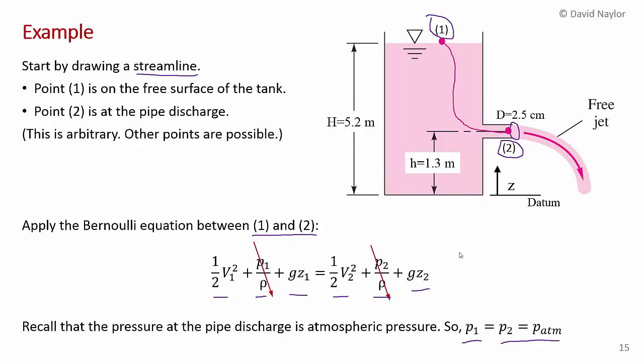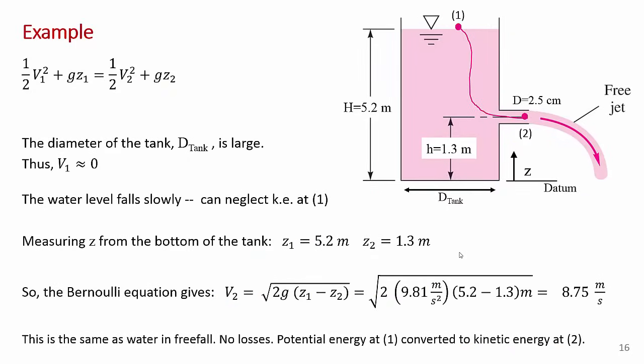So in the next slide, I think I've rewritten this with those two terms eliminated. So now we just have the kinetic energy per unit mass plus the potential energy per unit mass at one equals the kinetic energy at two per unit mass plus the potential energy at two per unit mass.